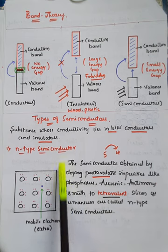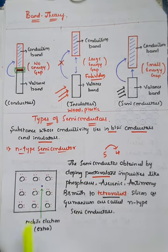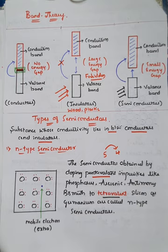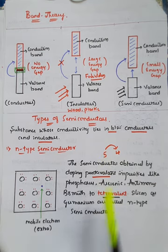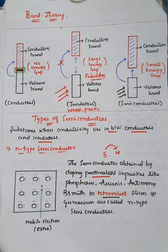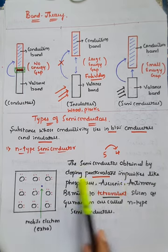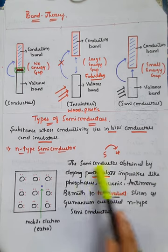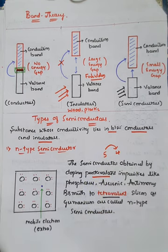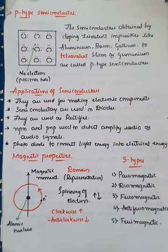When pentavalent impurities like phosphorus, arsenic, antimony, or bismuth are added to the crystal system, one extra electron can be seen at the interstitial site — that is called a mobile electron. Along with four electrons there will be one extra, so this is called n-type semiconductor. Even for two marks, just write the definition: the semiconductor obtained by doping pentavalent impurities — adding five to four — is called an n-type semiconductor.